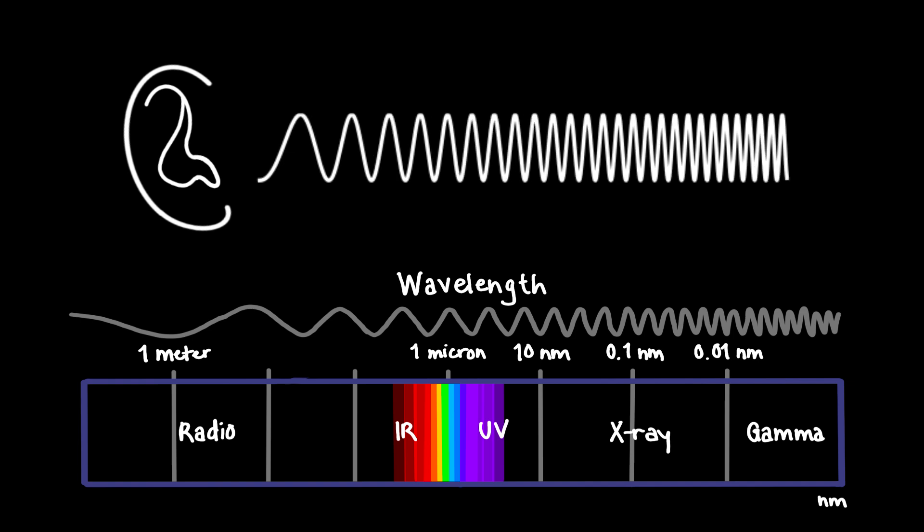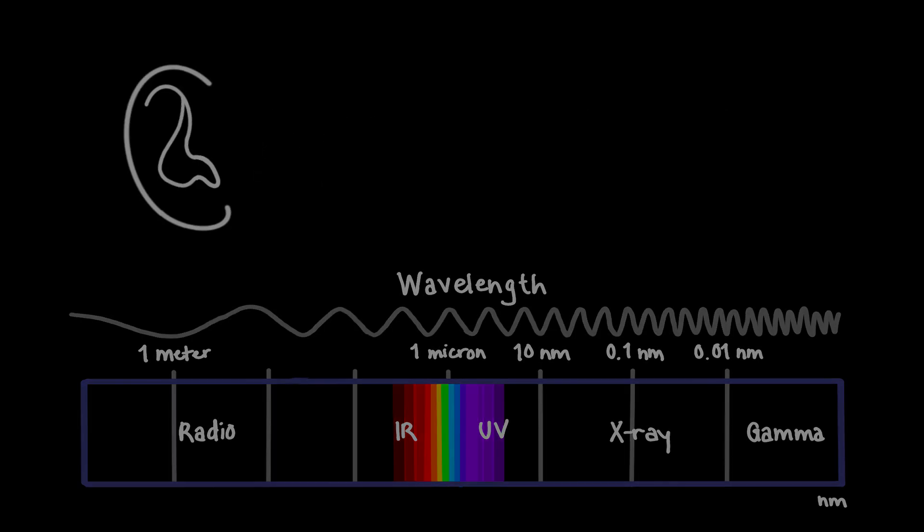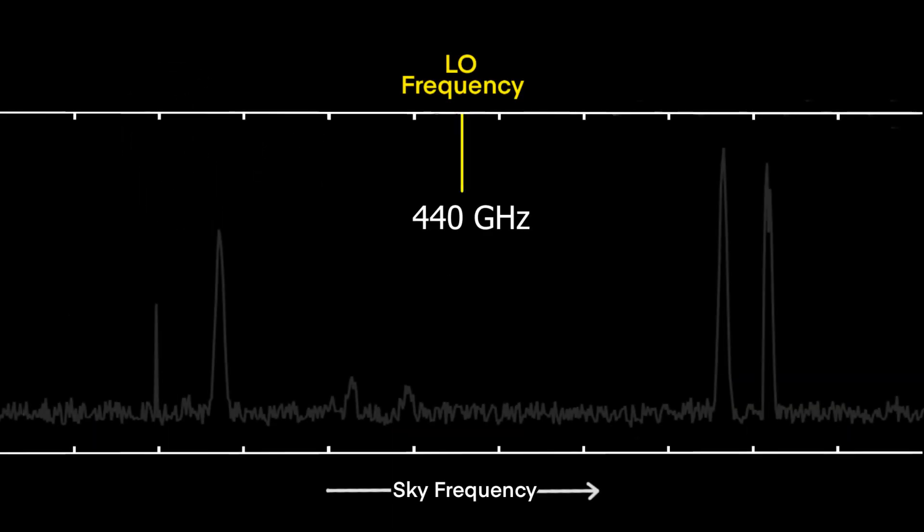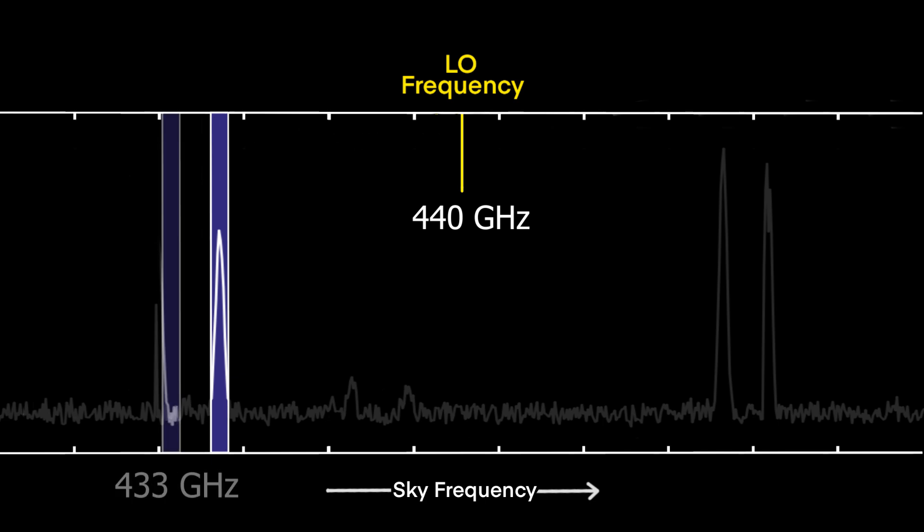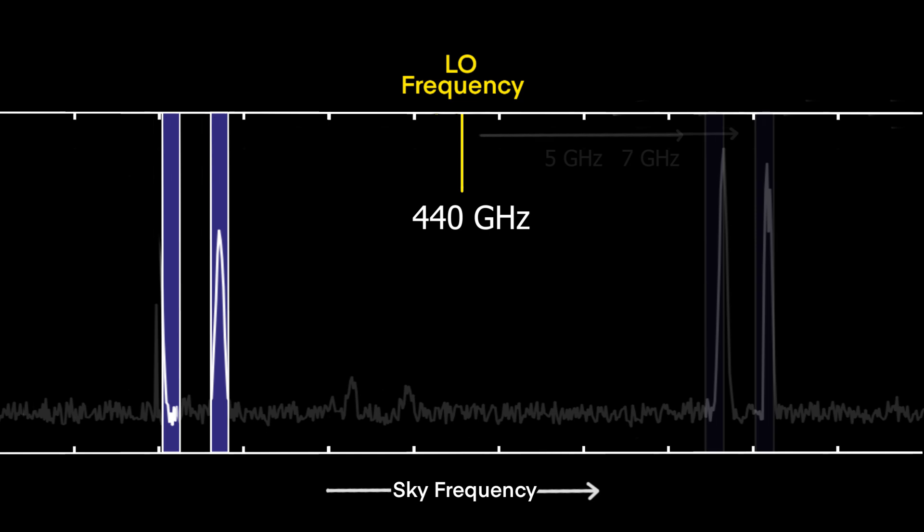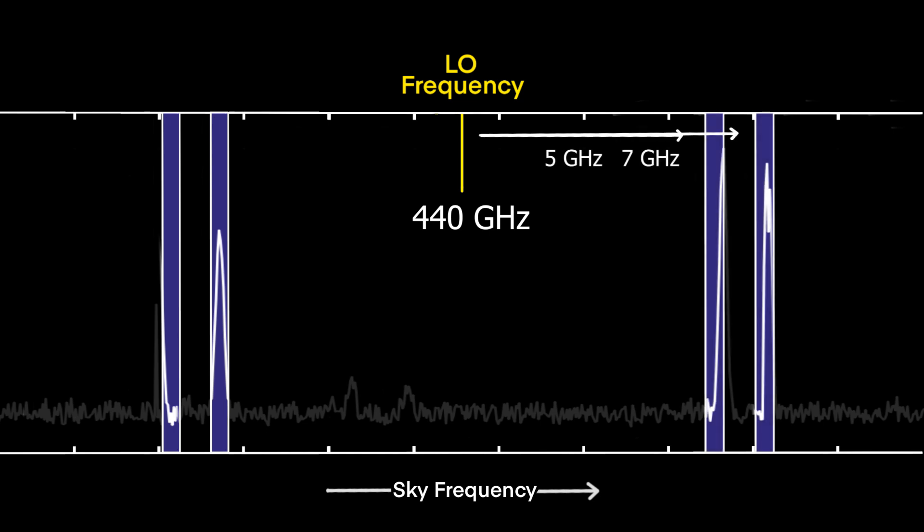Like sound waves, electromagnetic radiation exists over a continuum of frequencies. That 440 gigahertz LO will mix with a signal at 435 gigahertz to create an IF at 5 gigahertz, or with a signal at 433 gigahertz to create an IF at 7 gigahertz, and so on, and similarly with the upper sideband. ALMA receivers are designed to be sensitive not just to a single IF frequency, but to a range a few gigahertz wide.